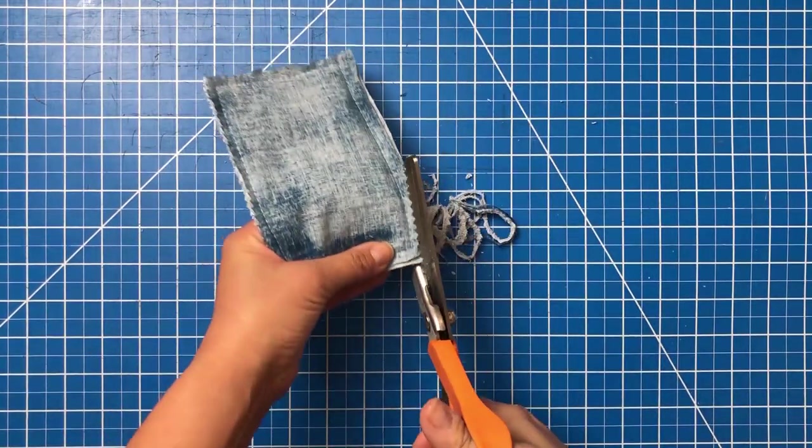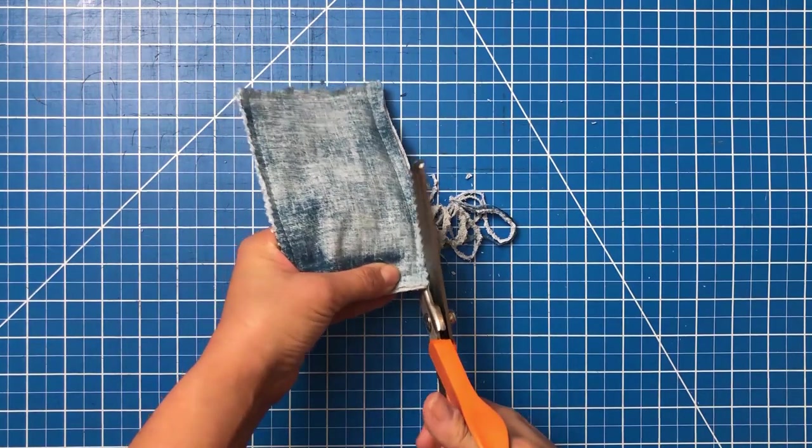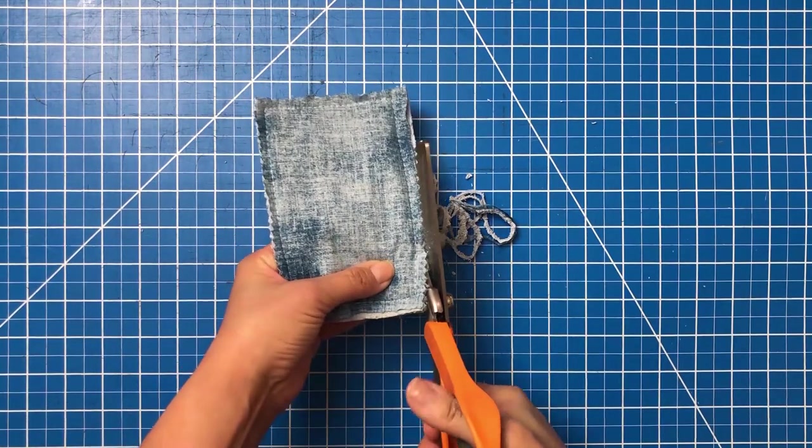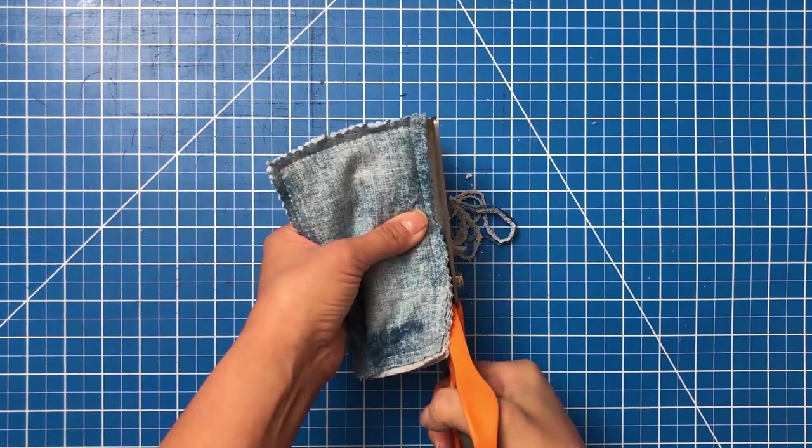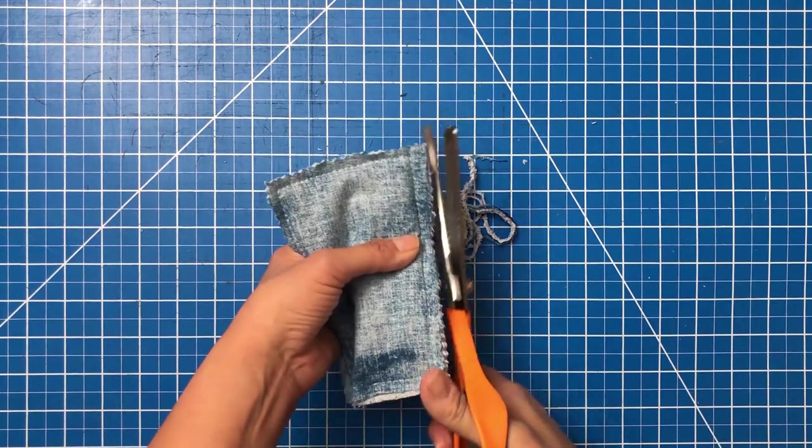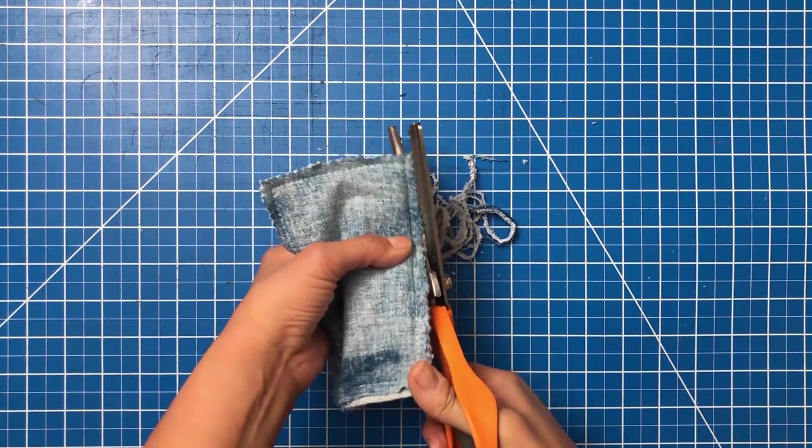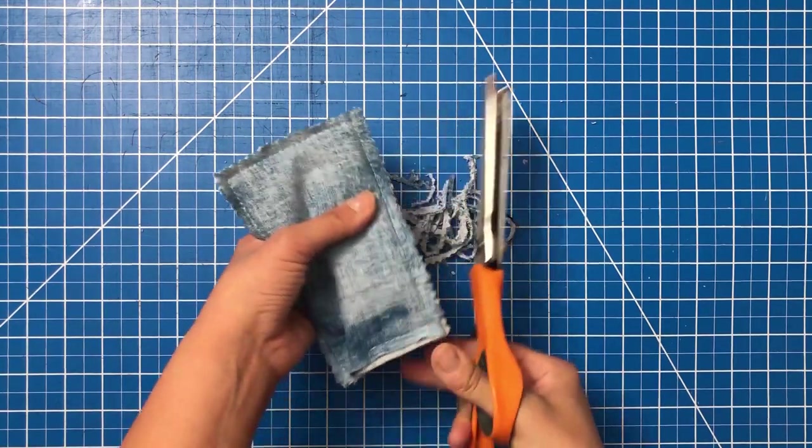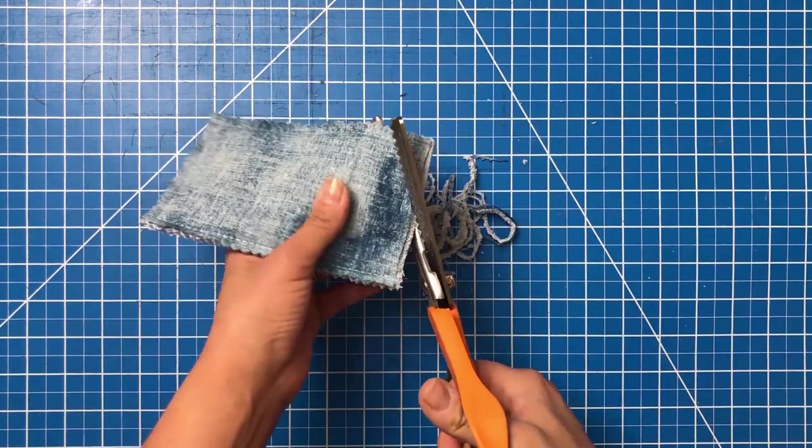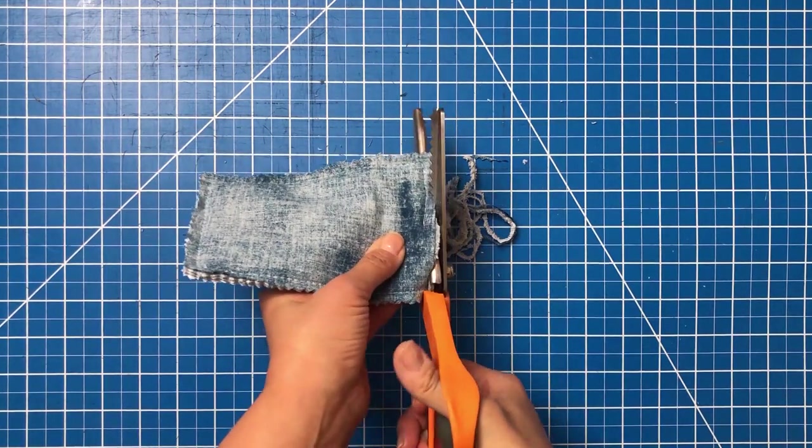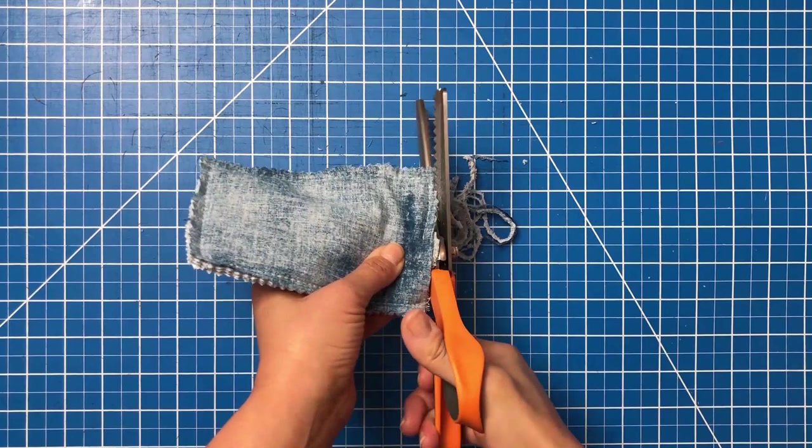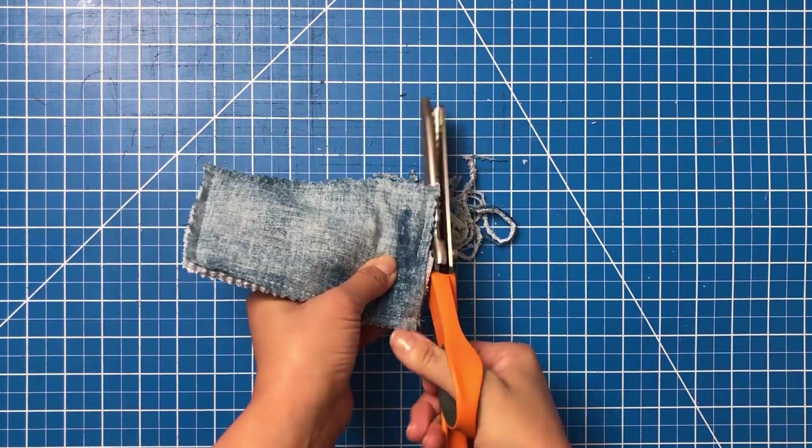All right, this other long side. And then this last side. I'll leave a little more room on that opening so that I can tuck in that seam allowance when I turn it right side out.